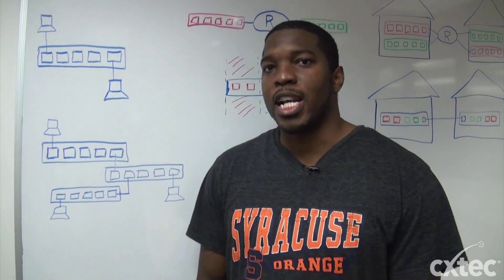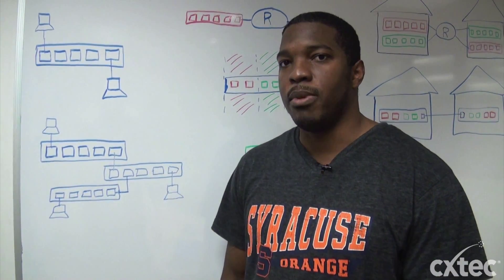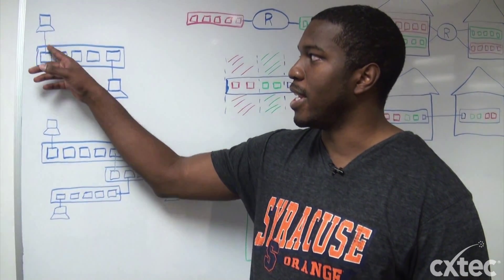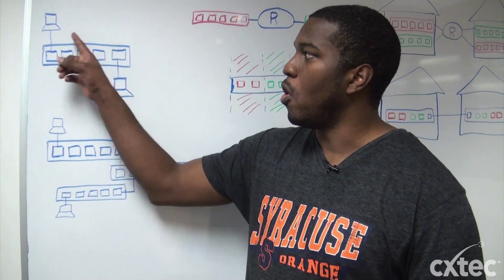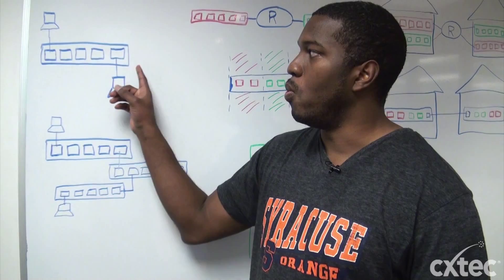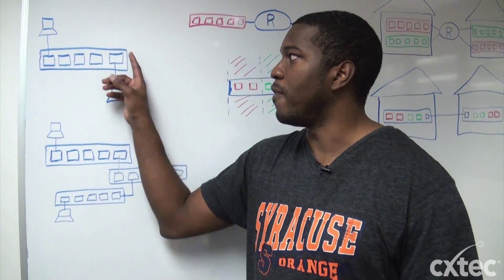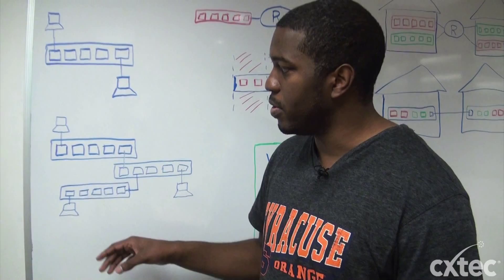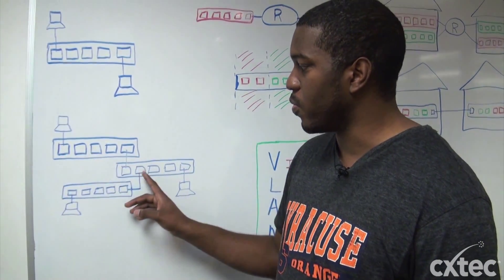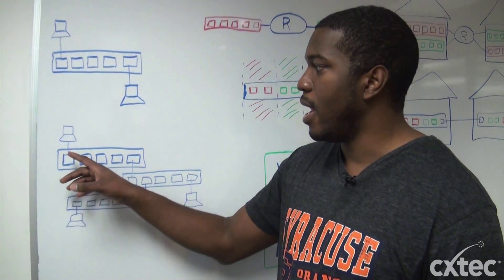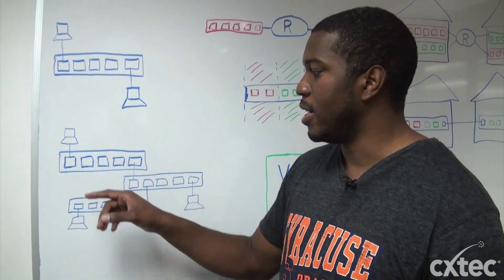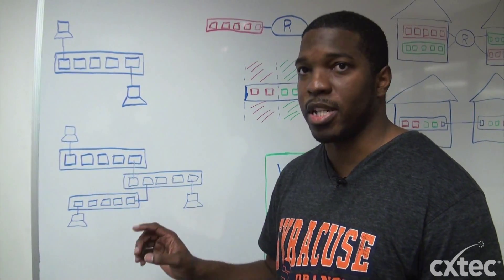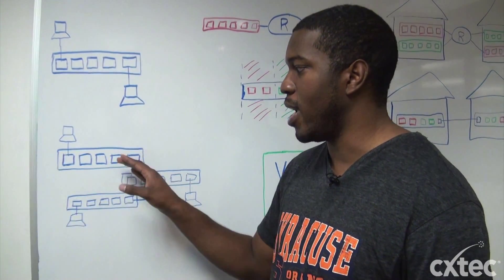Switches are pretty complicated, but when you first plug them in and just set the factory defaults, basically anything can get to anything. This is all in one VLAN — usually it's the default VLAN. As you add more switches, that holds true. This is three switches right here, and anything plugged into this one can get to this. All this can communicate with each other. It's one big broadcast domain.